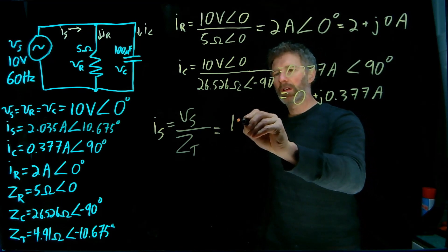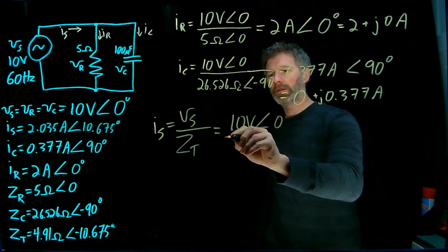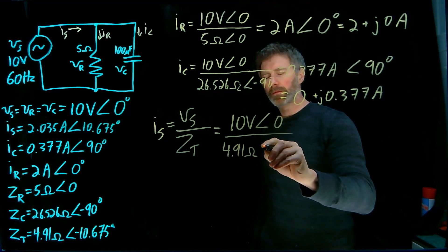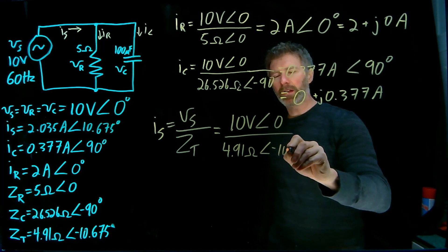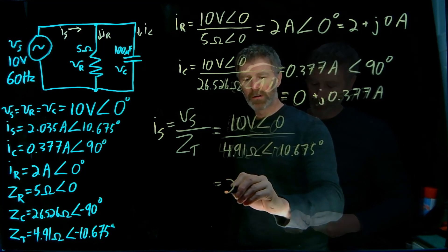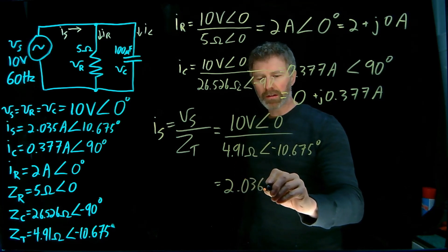So that's 10 volts with a phase angle of zero degrees over 4.91 ohms with the phase angle of -10.675 degrees. So 10 over 4.91, 2.036 amps. So it's probably a rounding issue. That's why that last digit there is not the same.